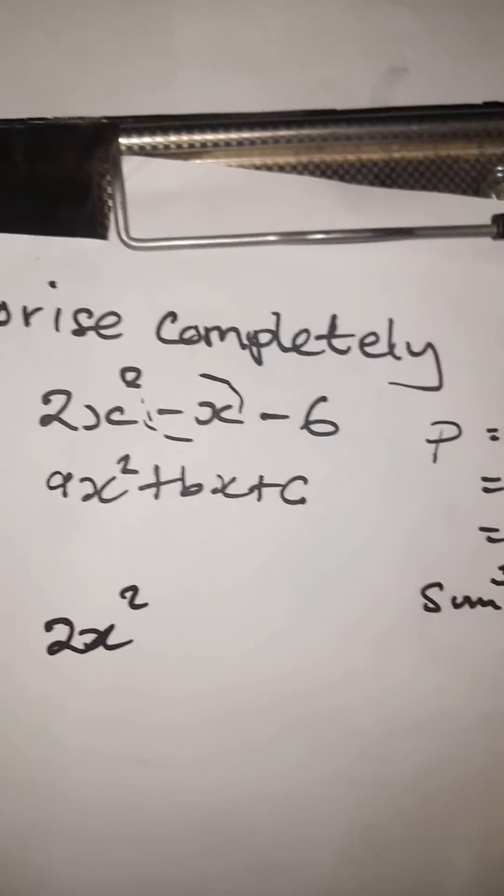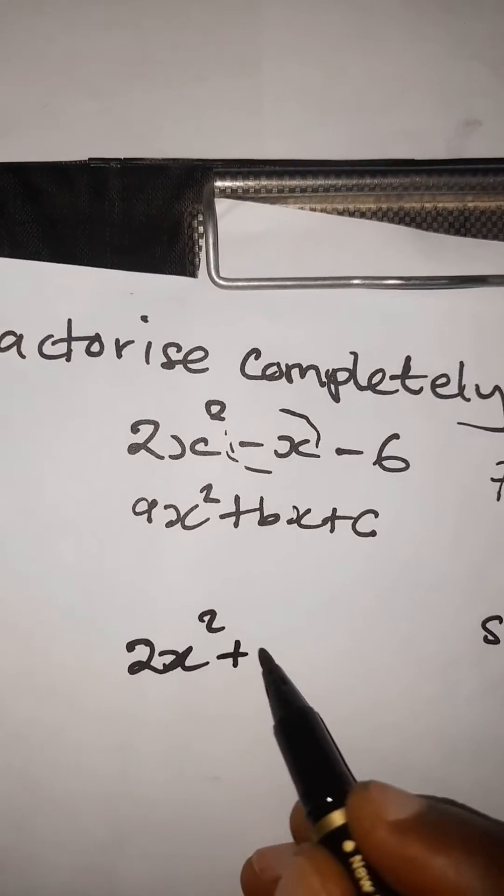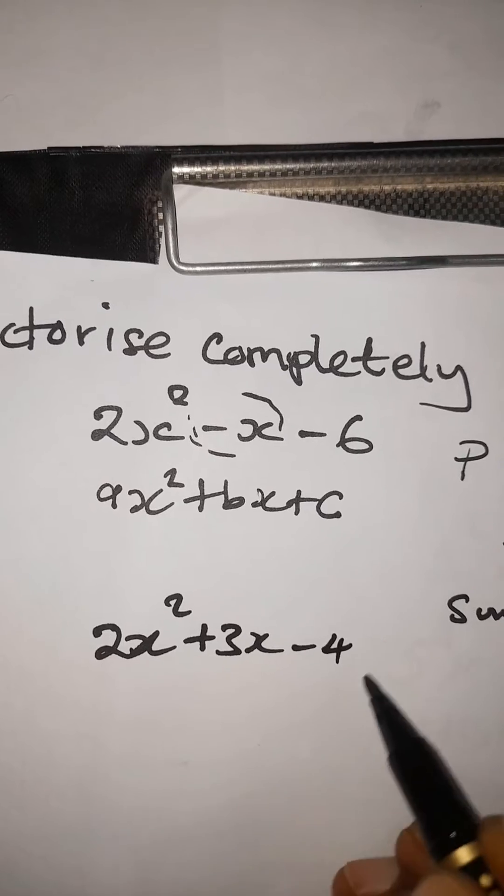It will be 2x squared, using these factors. Let's start with 3: 3x minus 4x minus 6.